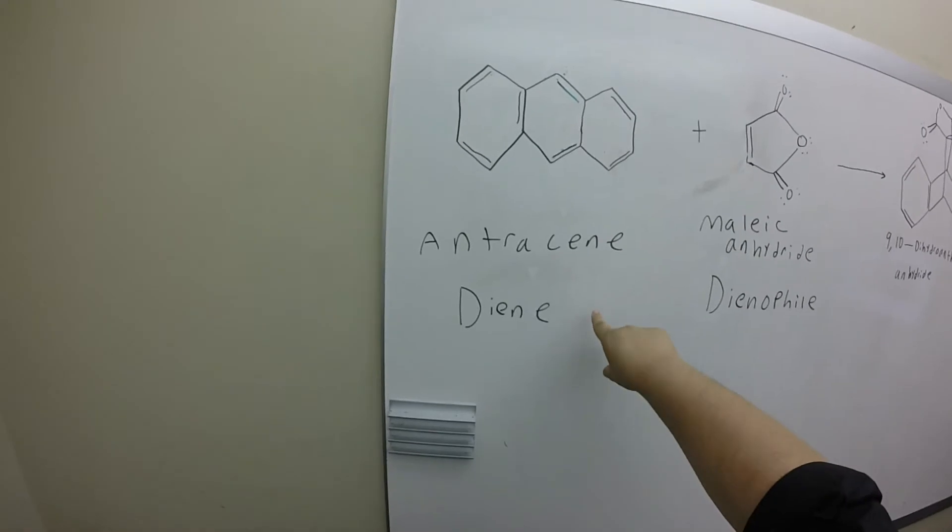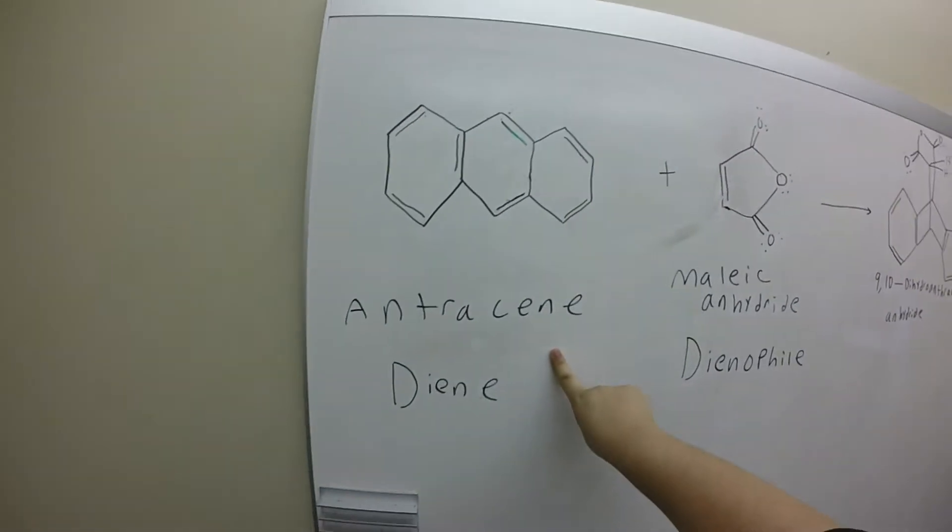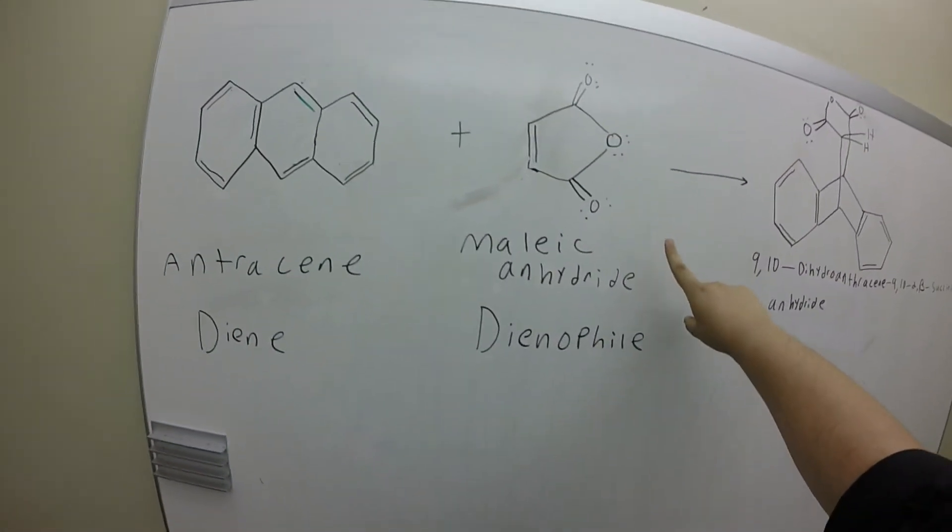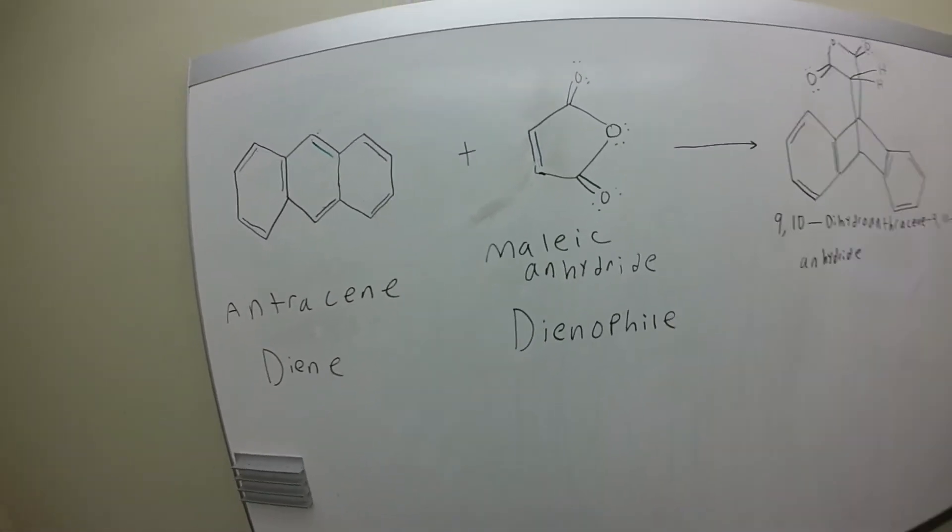So we have our electron-rich diene, which is anthracene, and we have our electron-poor dienophile, which is maleic anhydride.